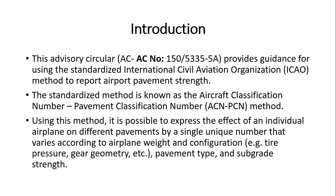So what is that circular? It provides guidance using the standardized International Civil Aviation Organization (ICAO) method to report airport pavement strength. This standardized method is known as the Airport Classification Number and Pavement Classification Number method. Using this method, it is possible to express the effect of an individual airplane on a pavement by a single unique number that varies according to airplane weight, configuration, tire pressure, geometry, pavement type, and subgrade strength.